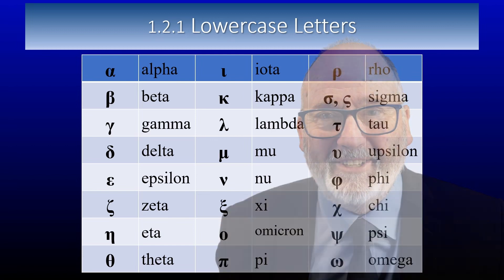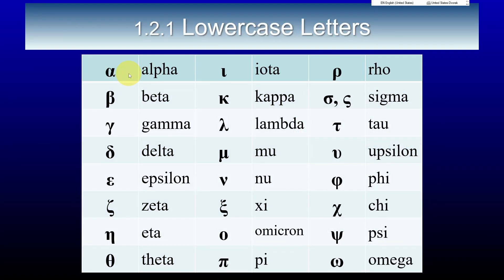Here goes. Here is alpha, beta, gamma, delta, epsilon, zeta, eta, theta, iota, kappa, lambda, mu.